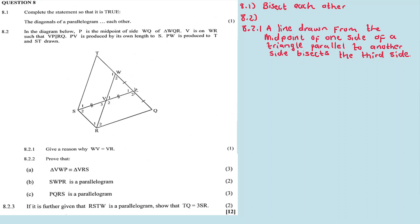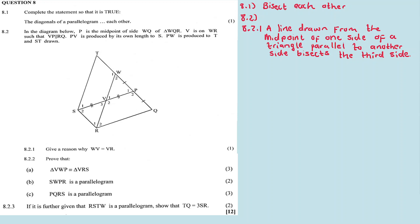The line is drawn from the midpoint of one side — this is one side — and then the line VP is parallel to another side, RQ. It comes and bisects the third side, WR. So basically, the reason is the Midpoint Theorem.